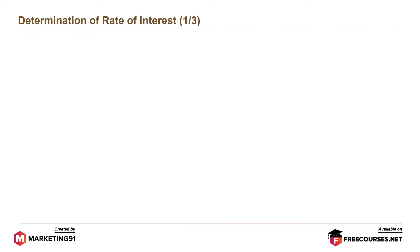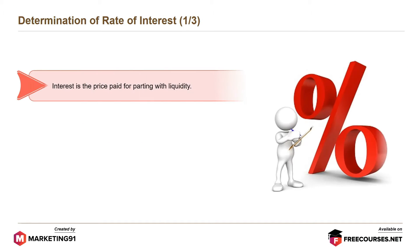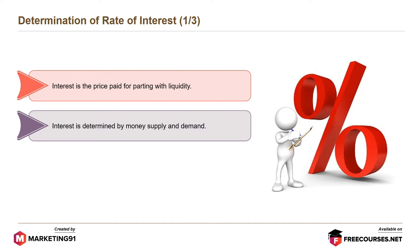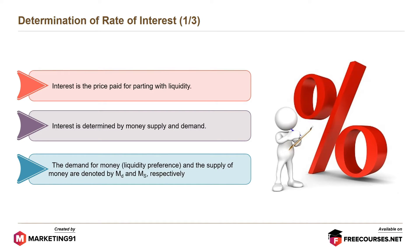Let's understand the determination of rate of interest. Interest is the price paid for parting with liquidity, and it is determined by money supply and demand. The demand for money, which is liquidity preference, and the supply of money are denoted by MD and MS respectively.